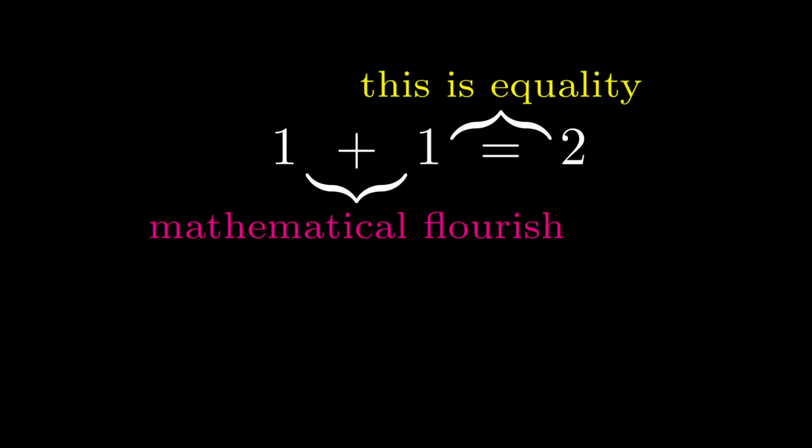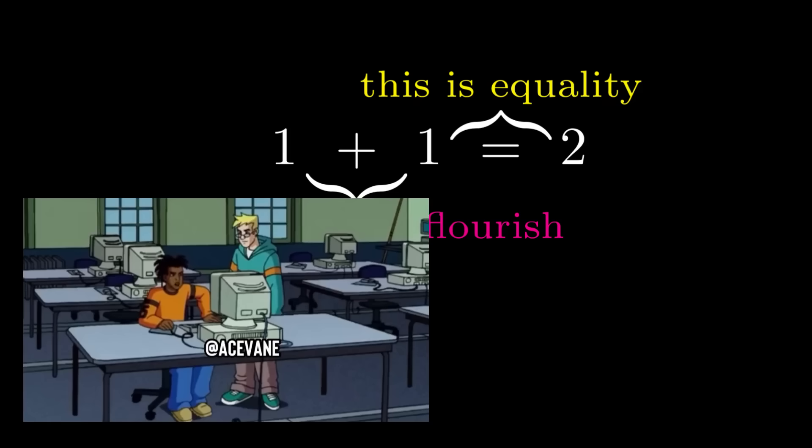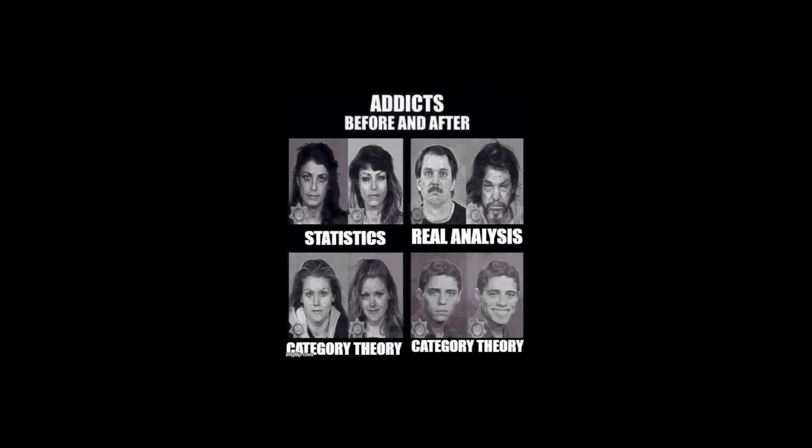In principle, you could stop here. I mean, that's what most people do. As I mentioned before, you can introduce a bunch of mathematical flourish to a set, and most people are DTF. What the fuck does that mean? I think it means down to flourish. However, there are inherent limitations to using this barely interesting notion of equality.